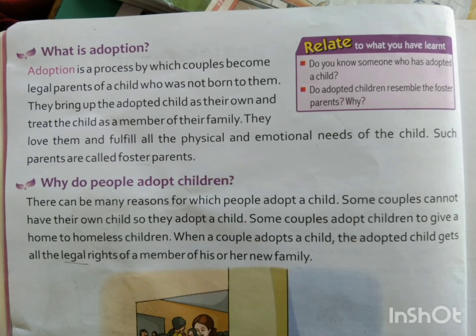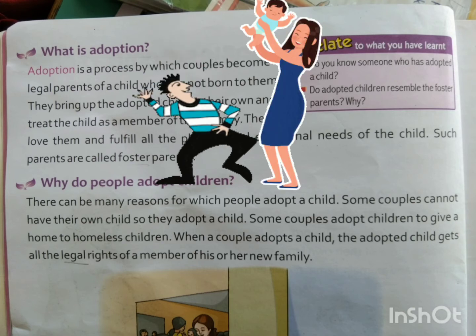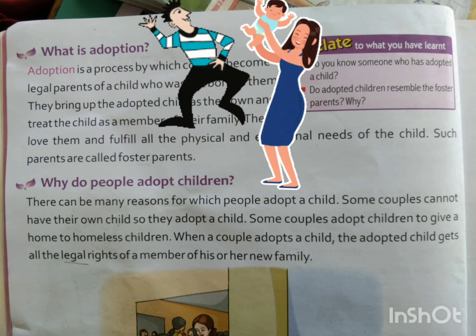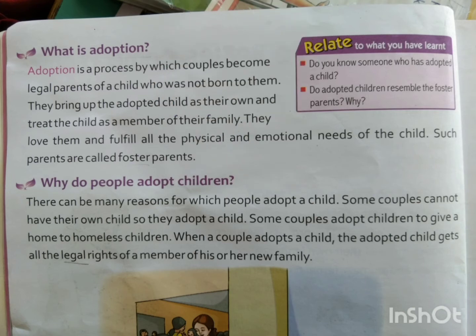Next point is: why do people adopt children? There can be many reasons for which people adopt a child. Some couples cannot have their own child, so they adopt a child. Some couples adopt children to give a home to homeless children. When a couple adopts a child, the adopted child gets all the legal rights of a member of his or her new family.